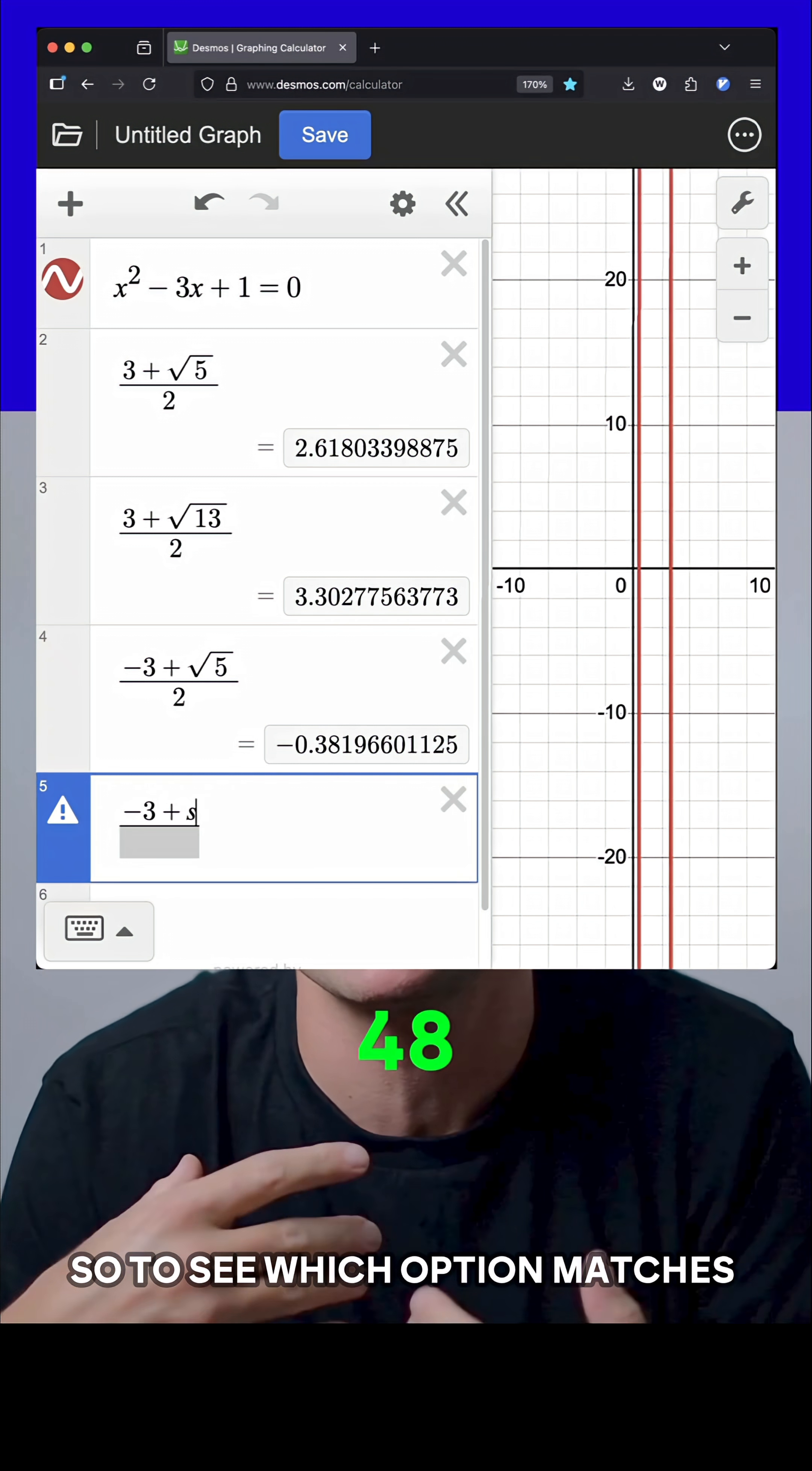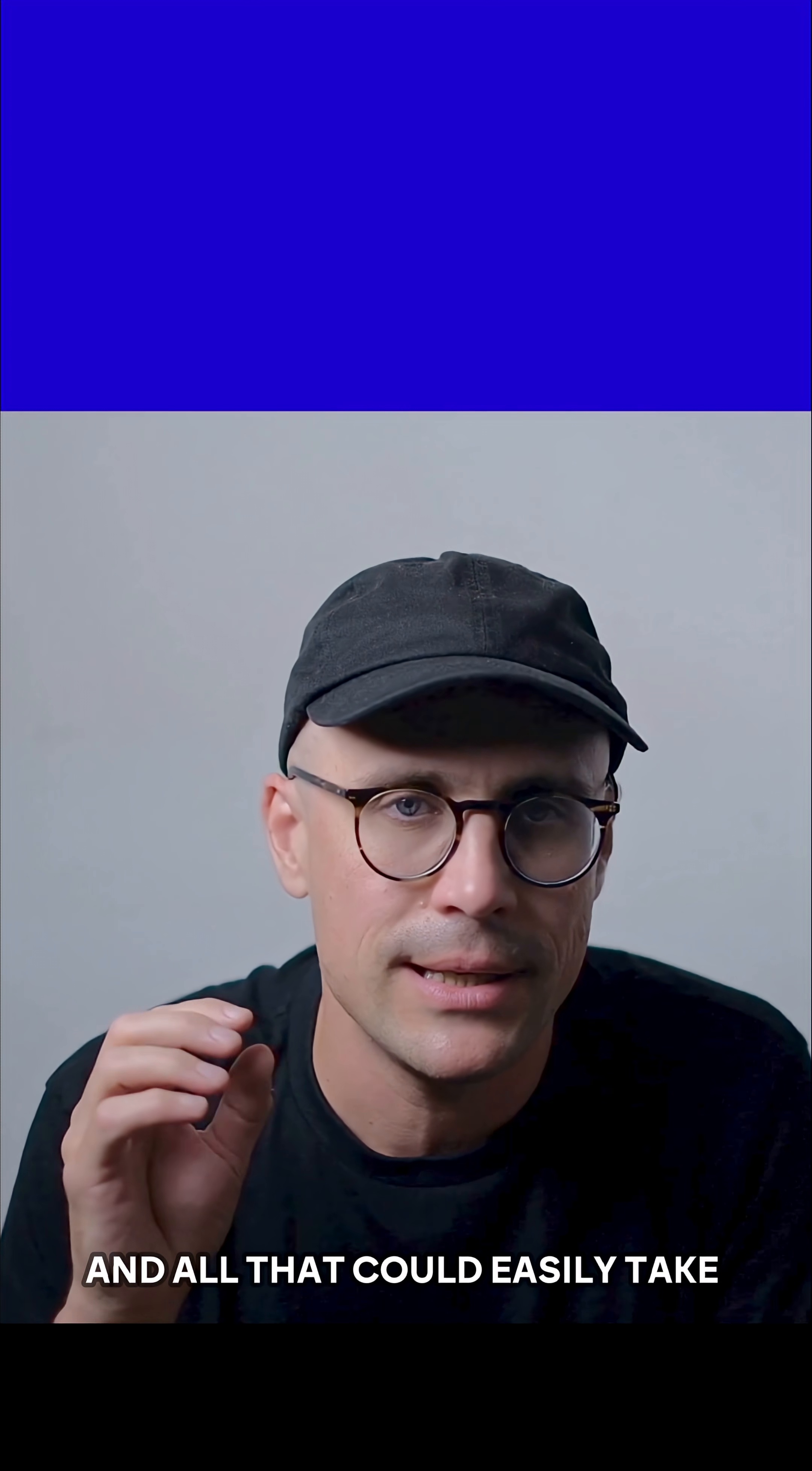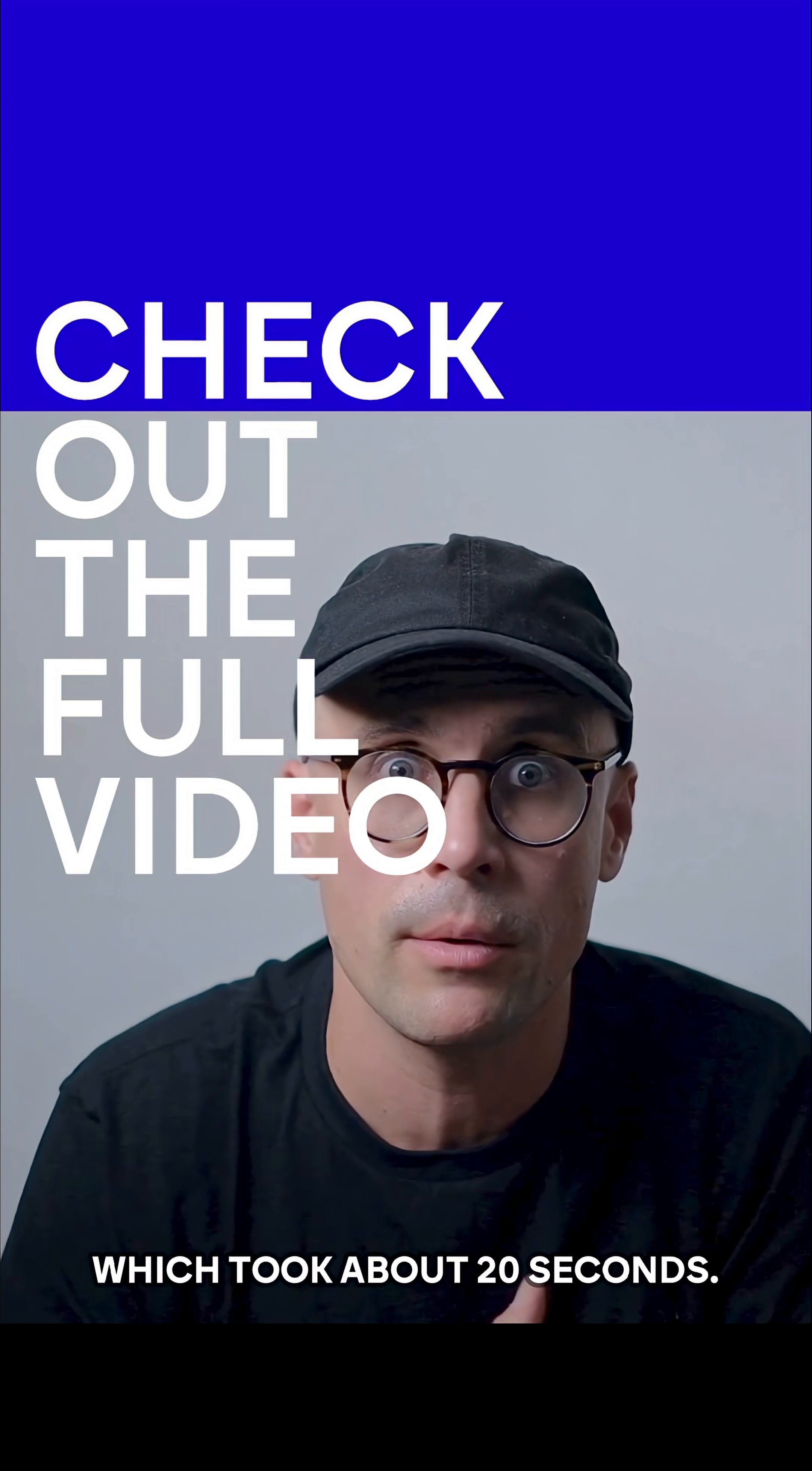So to see which option matches your Desmos solution, you're going to have to type the answer choices into your calculator until you find one that matches. And all that could easily take you over a minute, which is way longer than the mental calculations we performed earlier, which took about 20 seconds.